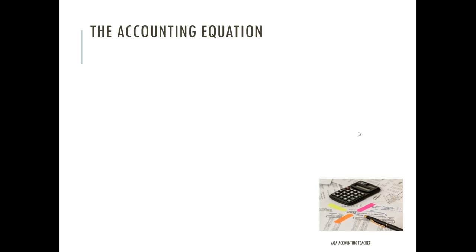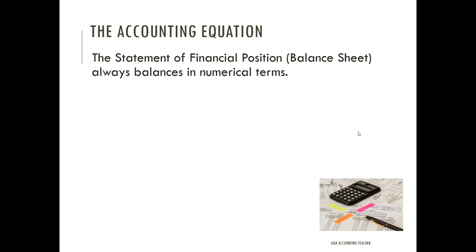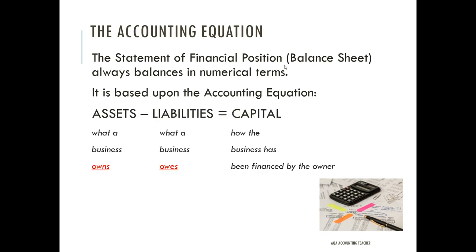The accounting equation is what the statement of financial position is built on. The statement of financial position gives an idea of the financial position of the business at a fixed date — usually the year-end — and it always balances numerically. It's based on the accounting equation, which states that assets minus liabilities always equals capital. Assets are what the business owns, liabilities are what the business owes, and the net result is the amount of capital — how much the business is worth or how it has been financed by the owner.